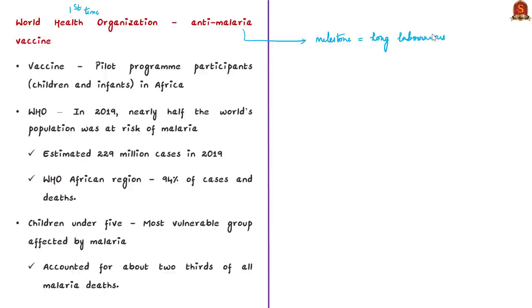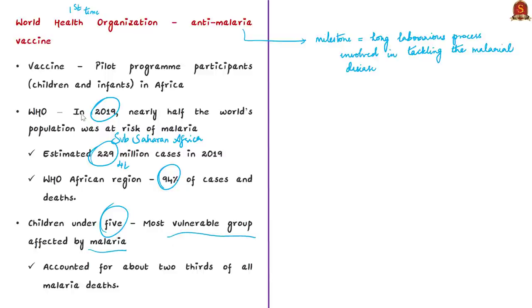This WHO-approved vaccine has been used in pilot program participants in Africa from the year 2015. The intensity of malaria around the world is quite intense. As per the WHO, in 2019, nearly half the world's population was at risk of malaria. Among them, most cases and deaths were found to occur in sub-Saharan Africa. There were an estimated 229 million cases in 2019. The malarial deaths stood at around 409,000 with the WHO African region carrying a disproportionate burden of up to 94% of cases and deaths.